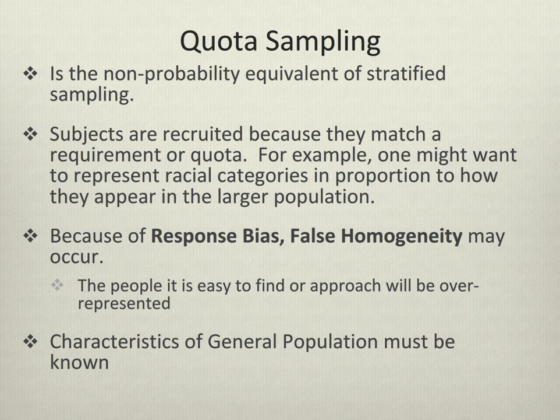In addition, in order to perform a quota sample, you need to know these characteristics about the general population. Alternatively, you could set your quotas at equal points — for example, going out to the quad and making sure that your sample contains 25% freshmen, 25% sophomores, 25% juniors, and 25% seniors.